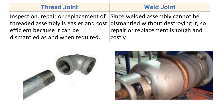Inspection, repair, or replacement of threaded assembly is easier and cost efficient because it can be dismantled as and when required. We can easily dismantle the threaded assembly and carry out inspection activities. Since a welded assembly cannot be dismantled without destroying it, repair or replacement is tough and costly — we have to destroy the component to separate it, making inspection difficult.